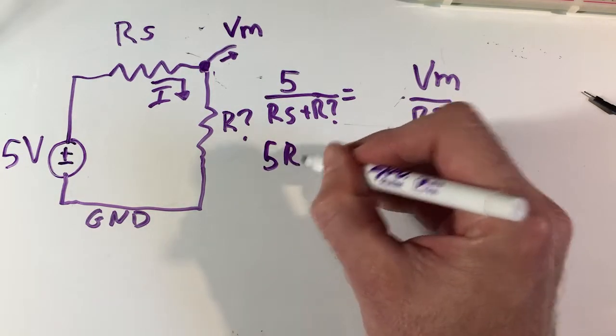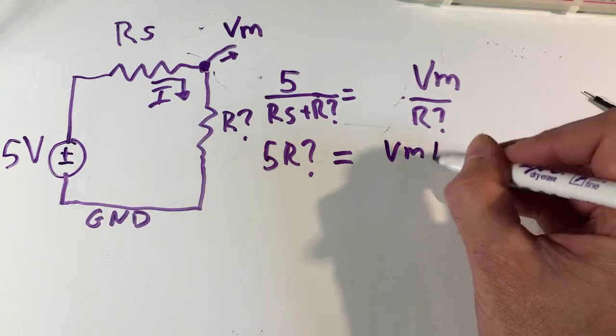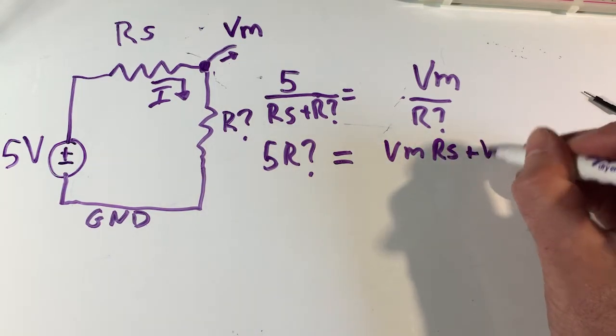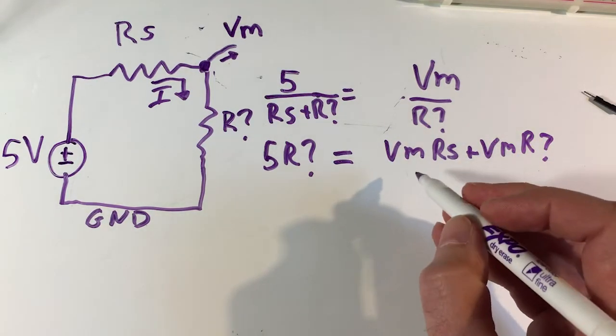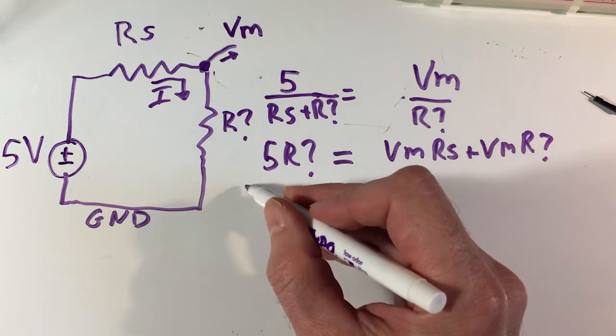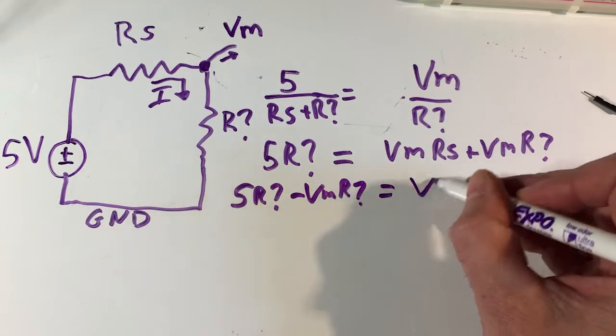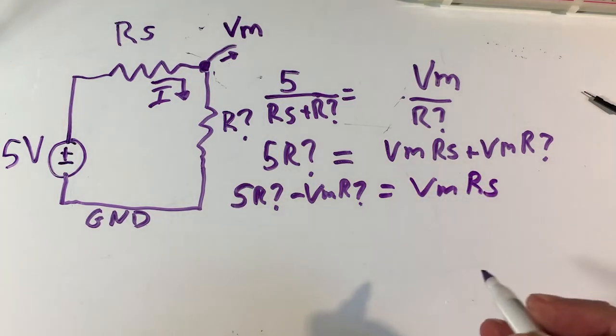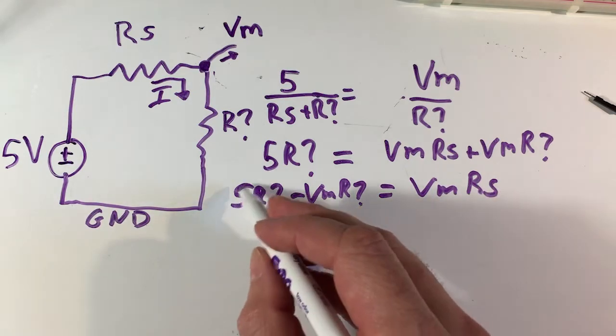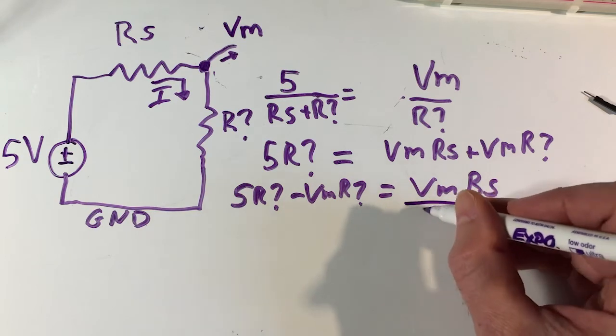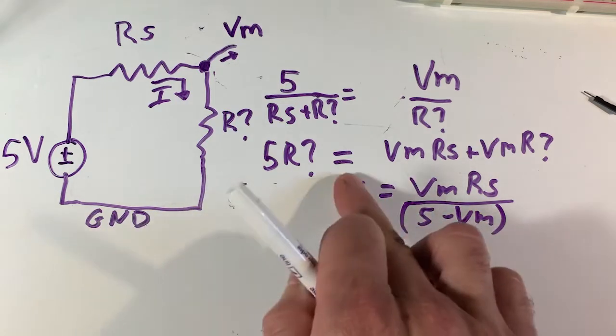We just have this equation and we could solve it for R question mark. So we'd have 5 R question mark equals VM RS plus VM R question mark. 5 minus VM. And now we could divide out the R question marks, or sorry we can divide out the 5 and the VM.